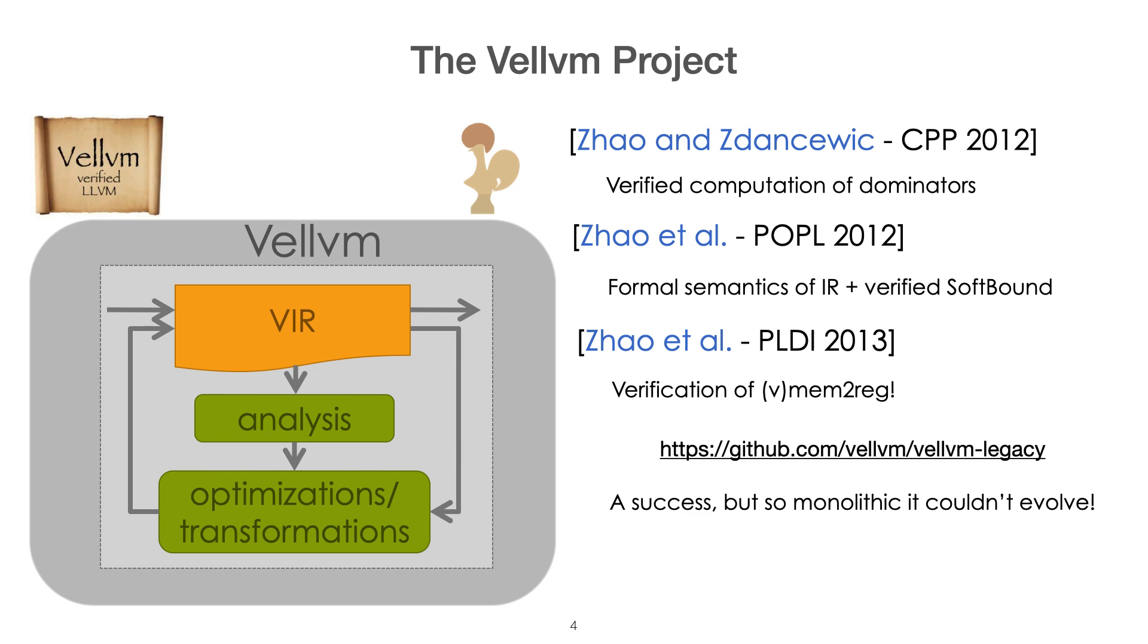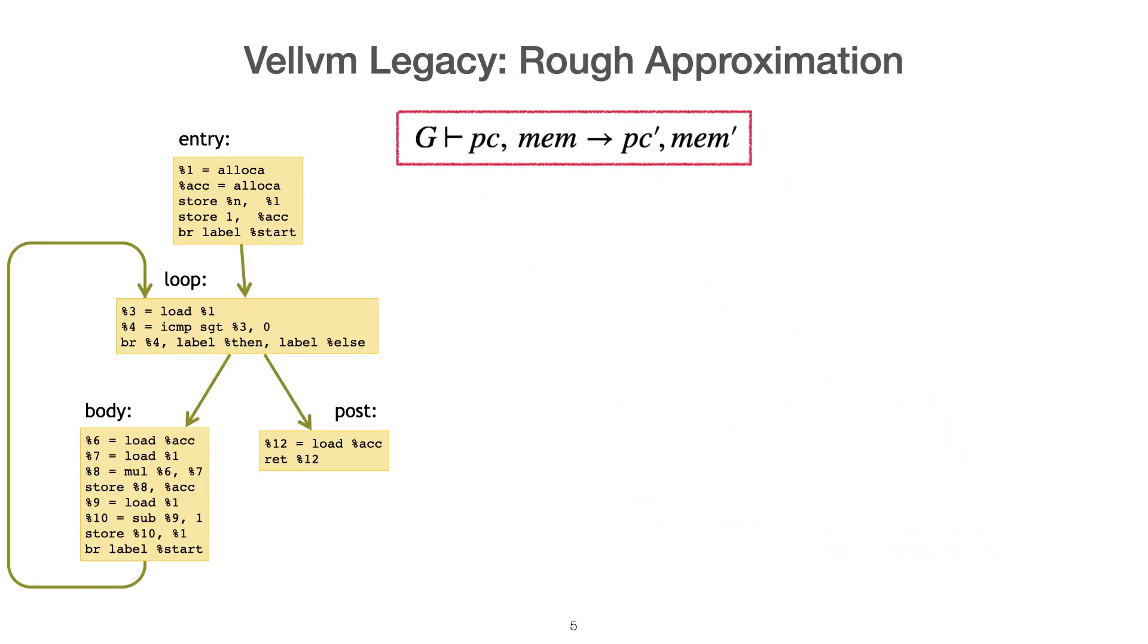But after this initial success, Vellvm was proven extremely hard to evolve, and in contrast, LLVM IR was evolving extremely fast. So in a sense, the gist of this paper is to provide new foundation for Vellvm, to revive it, and to do so under this idea that we would like to have a project able to keep up with the realistic language. There are of course many answers to such a difficult program, but the angle in particular that we will take here is a semantic angle.